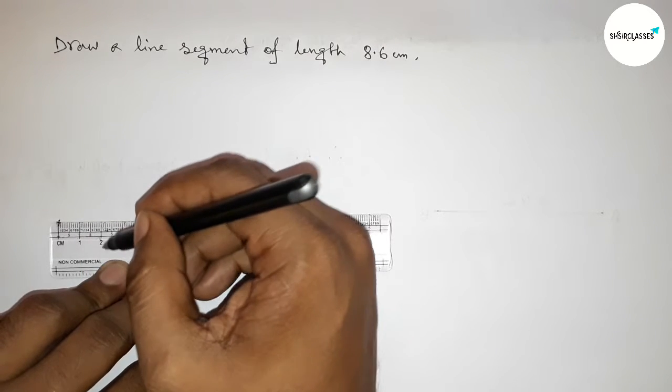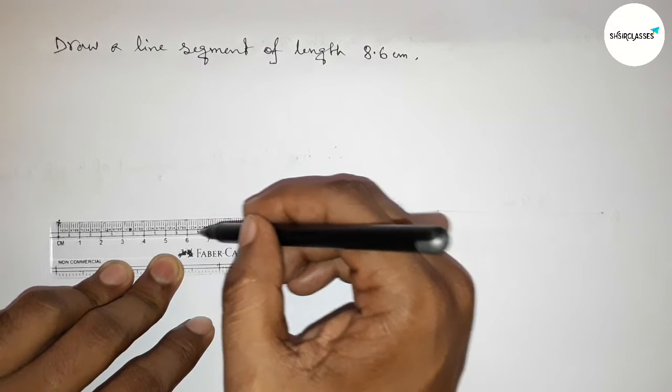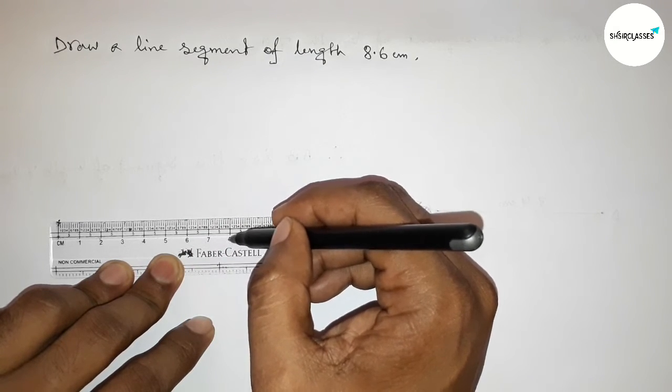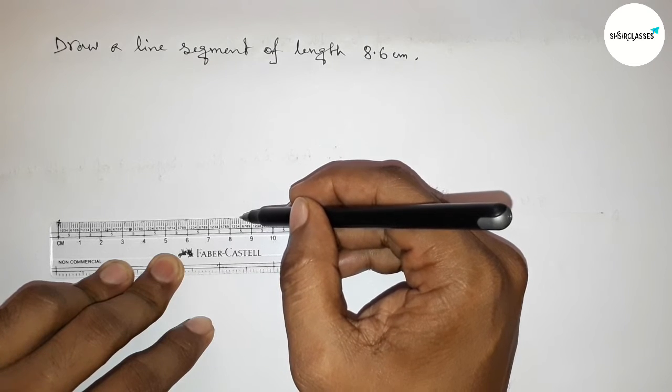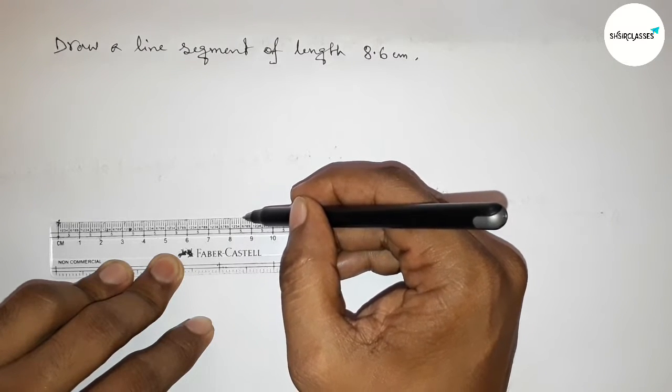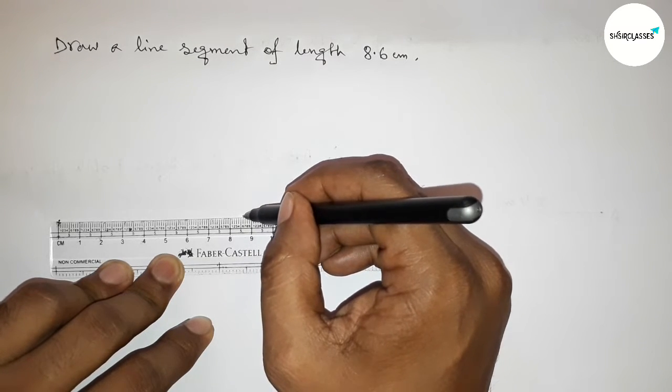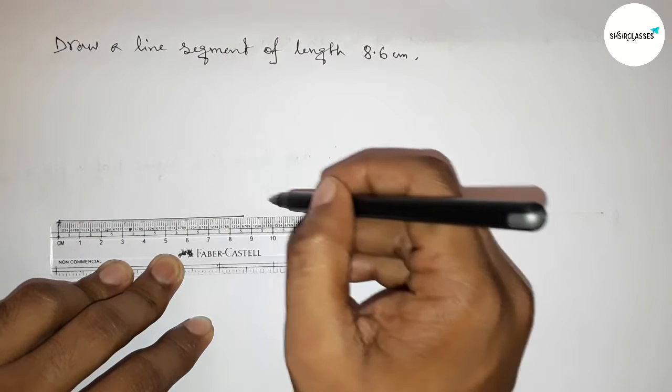So this is zero, one, two, three, four, five, six, seven, eight, and this is eight point five... eight point six. So this is eight point six centimeters. First marking eight point six